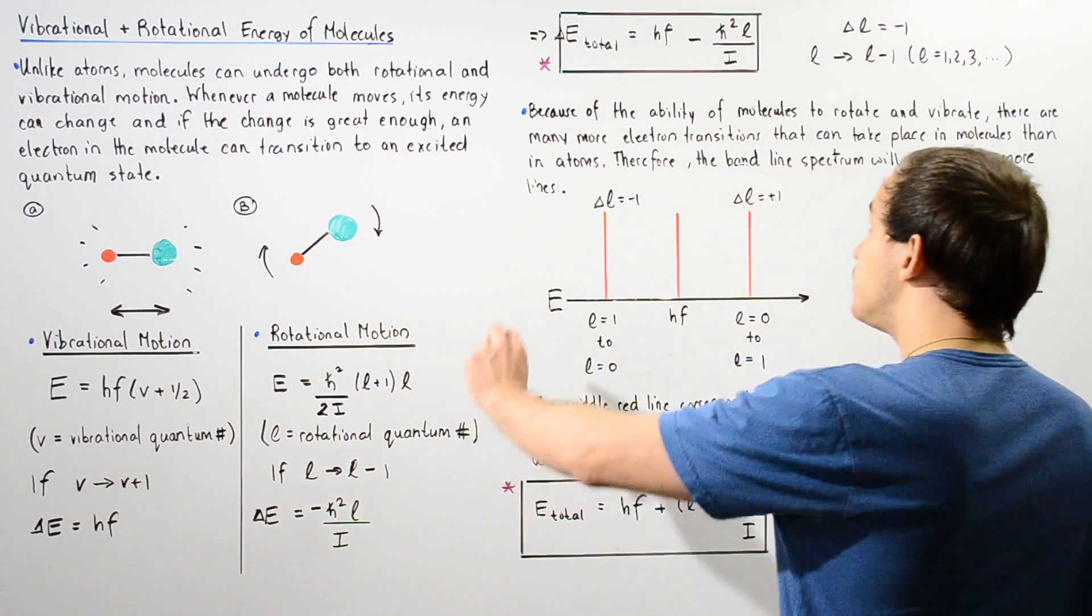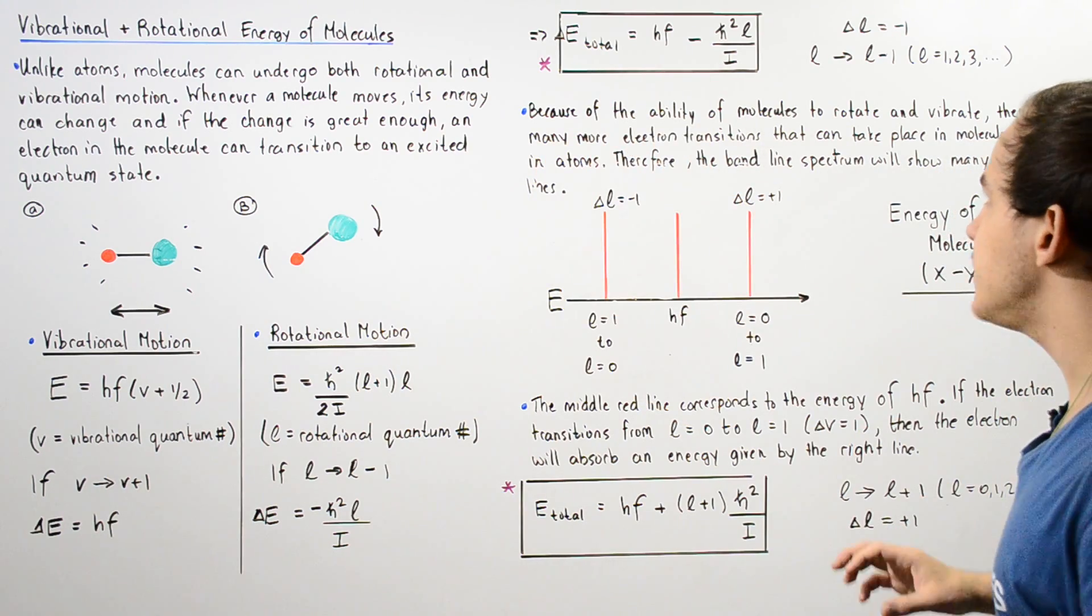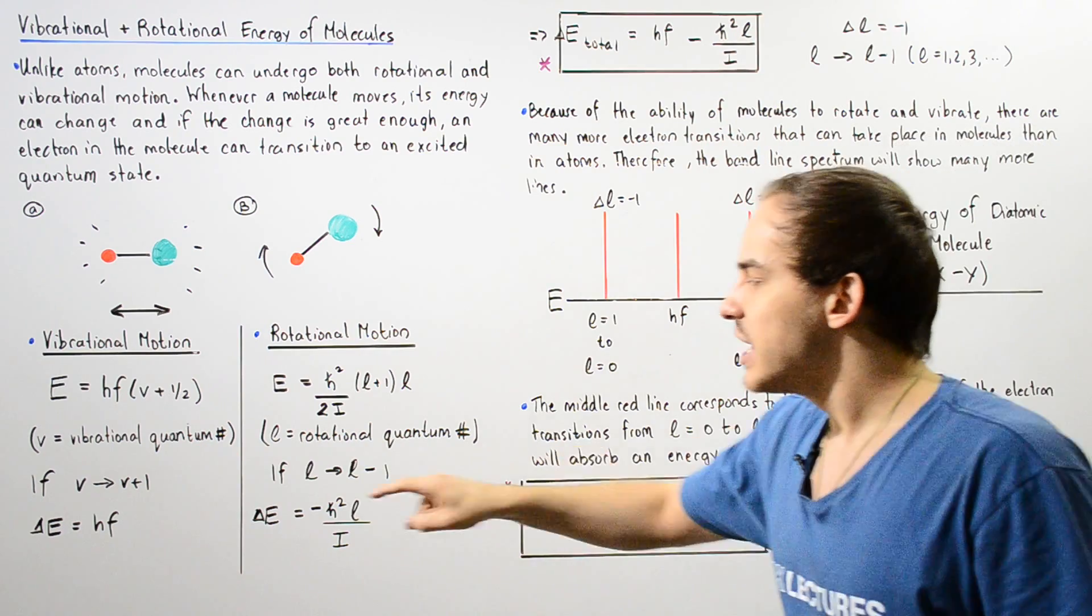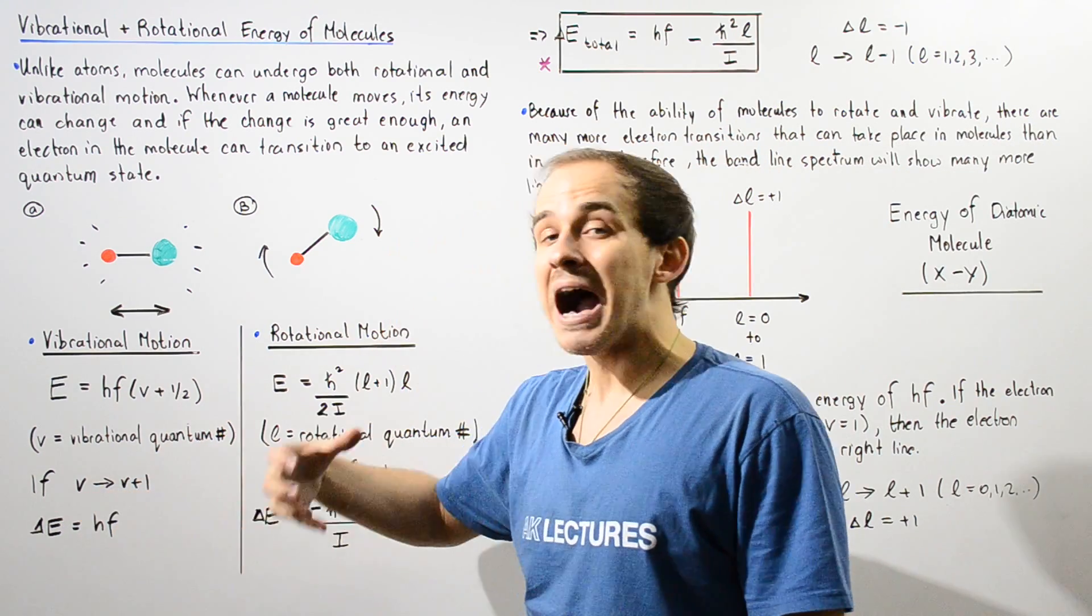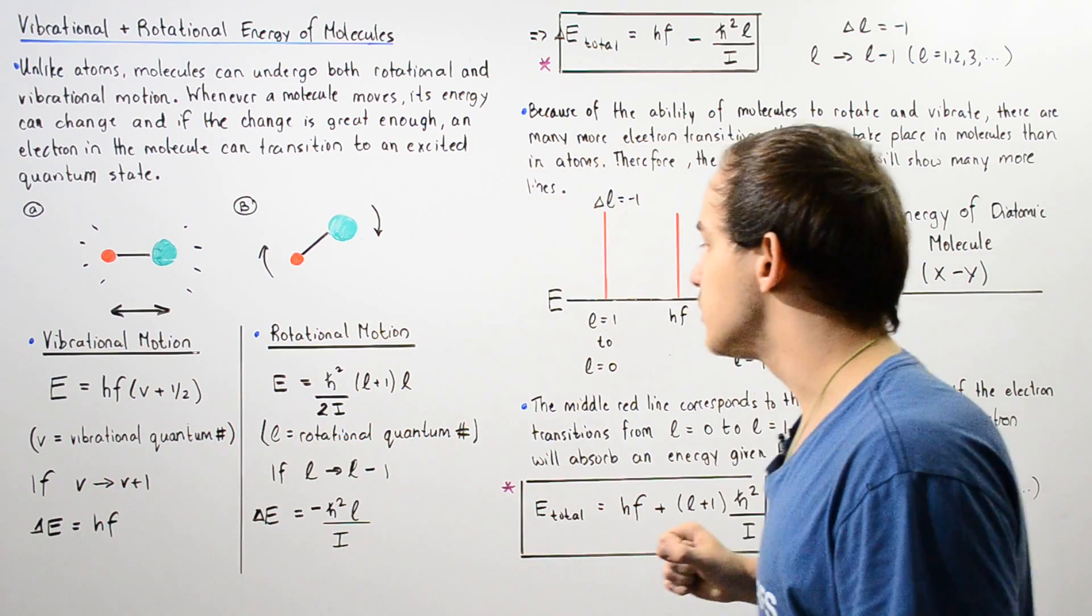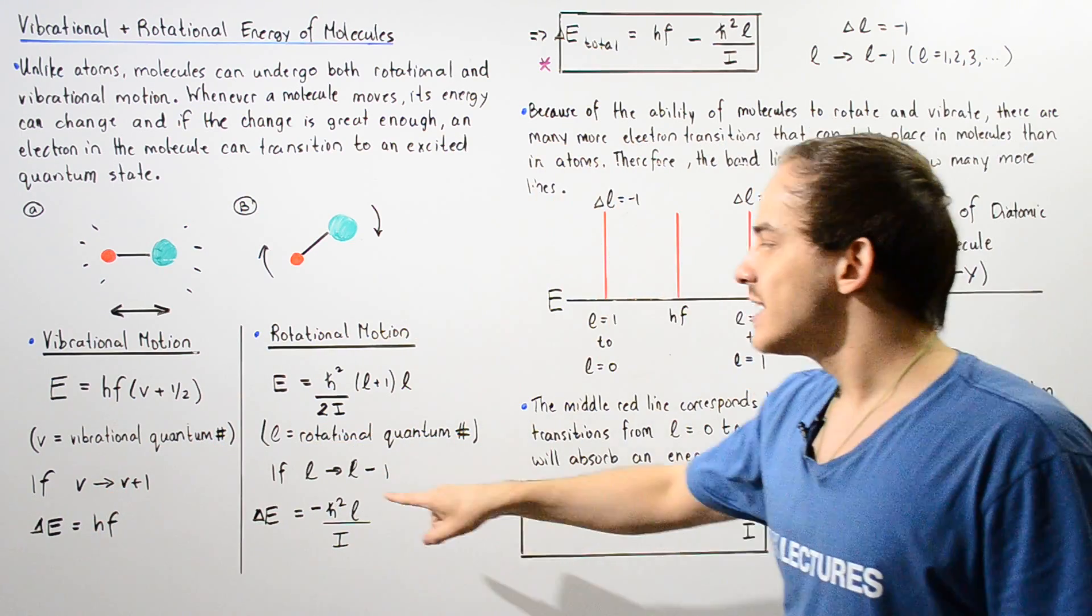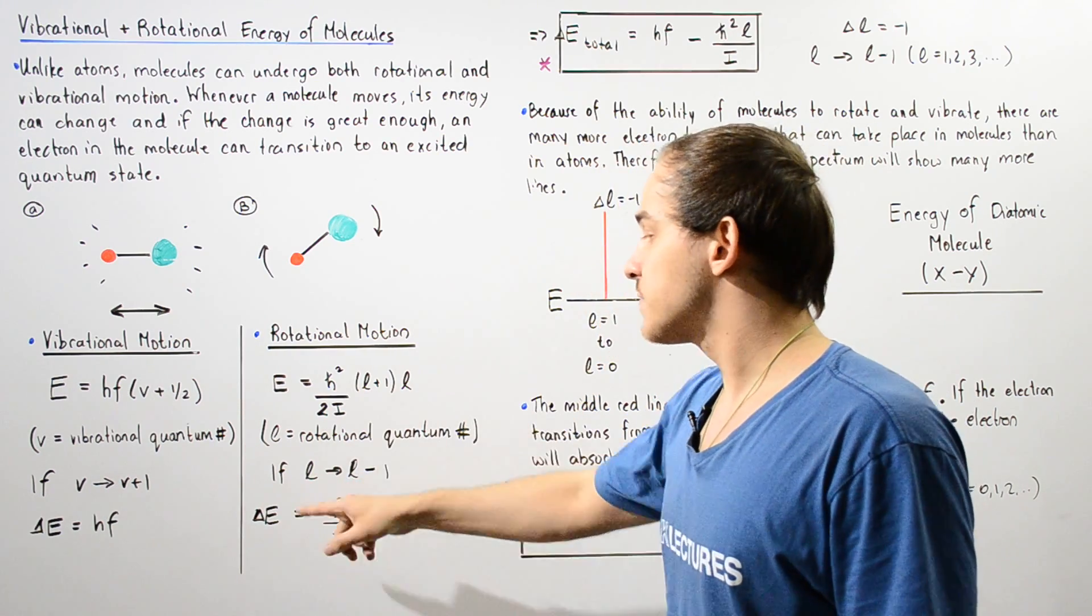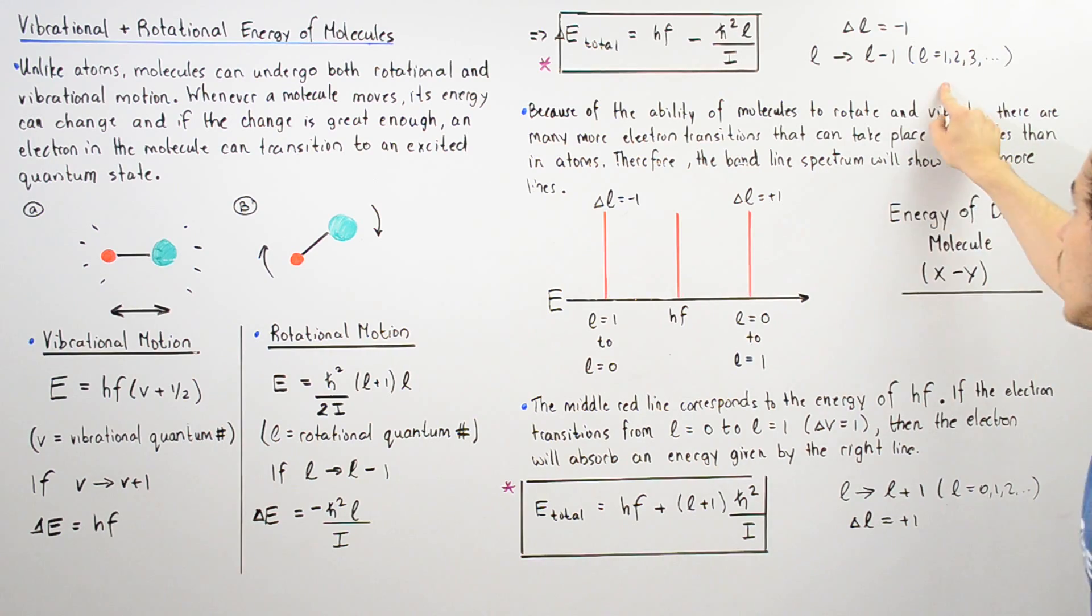And that is given by the following equation. So this equation is true as long as the delta V is positive 1. So the electron jumps from V to V plus 1 and as long as the delta L is negative 1. So L jumps or the electron jumps from L to L minus 1,